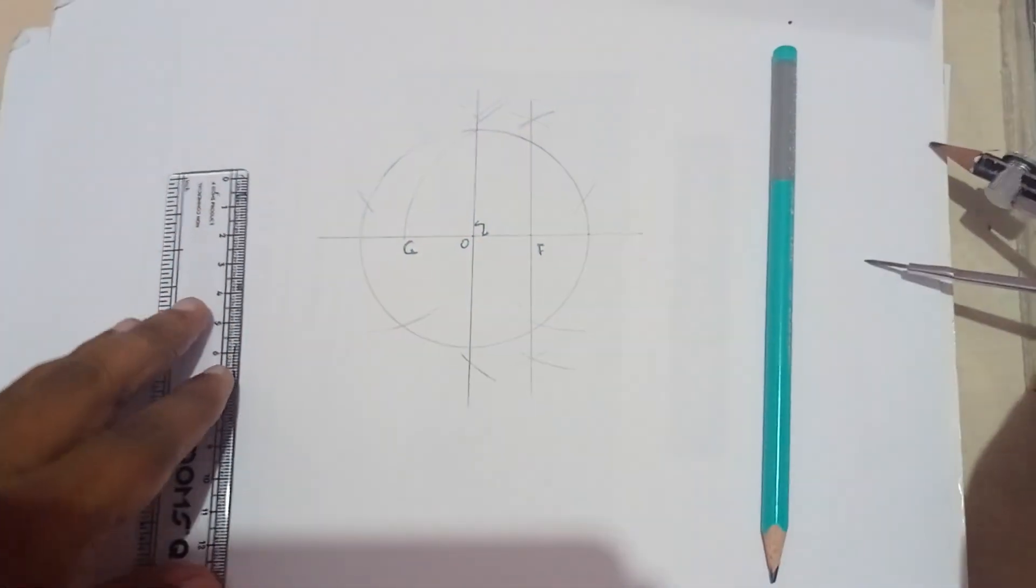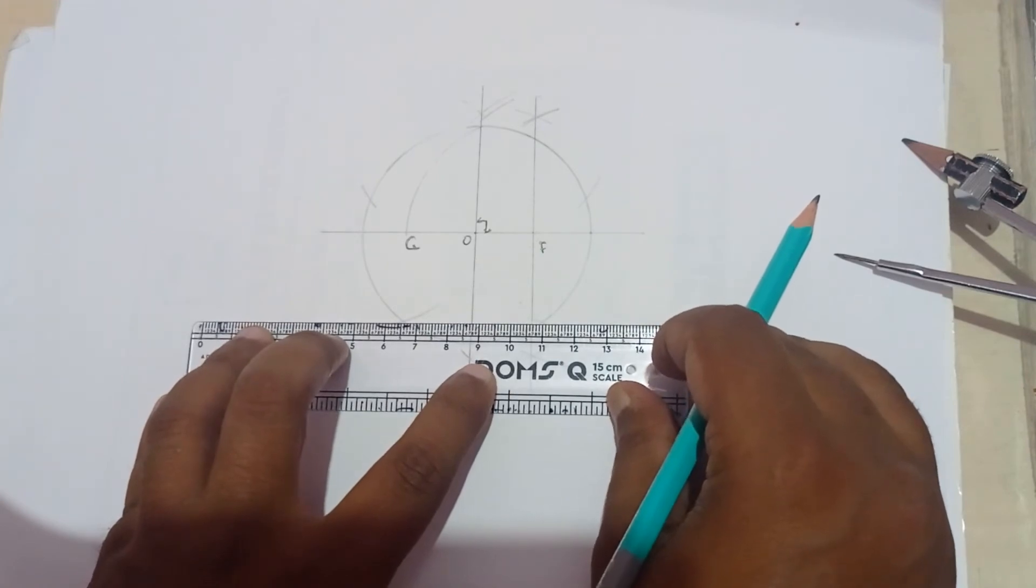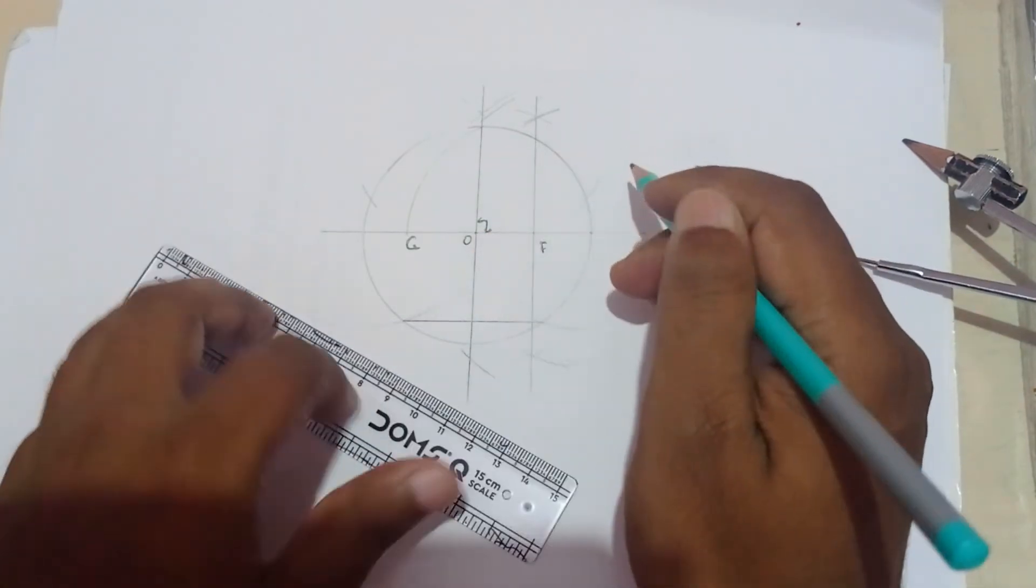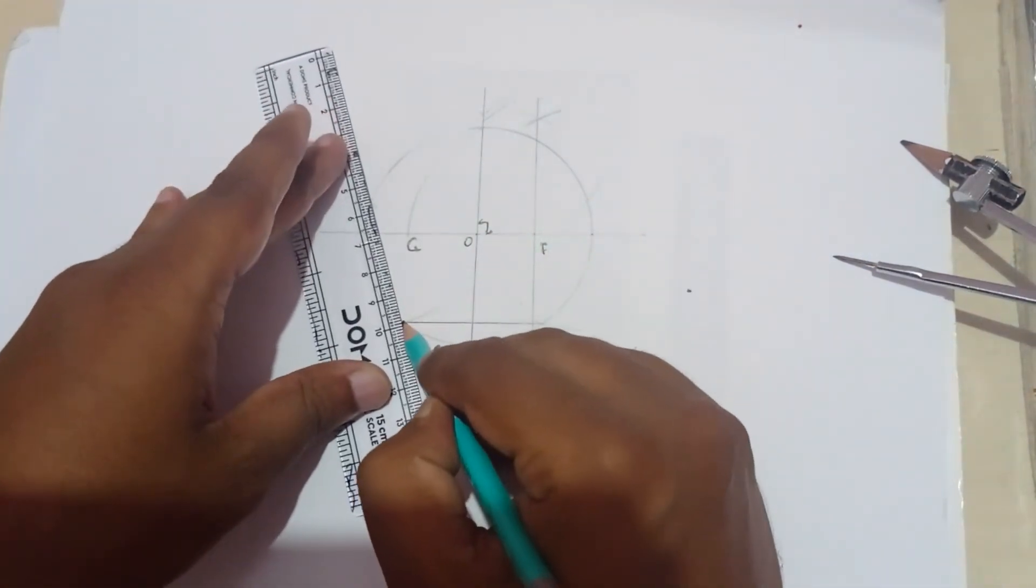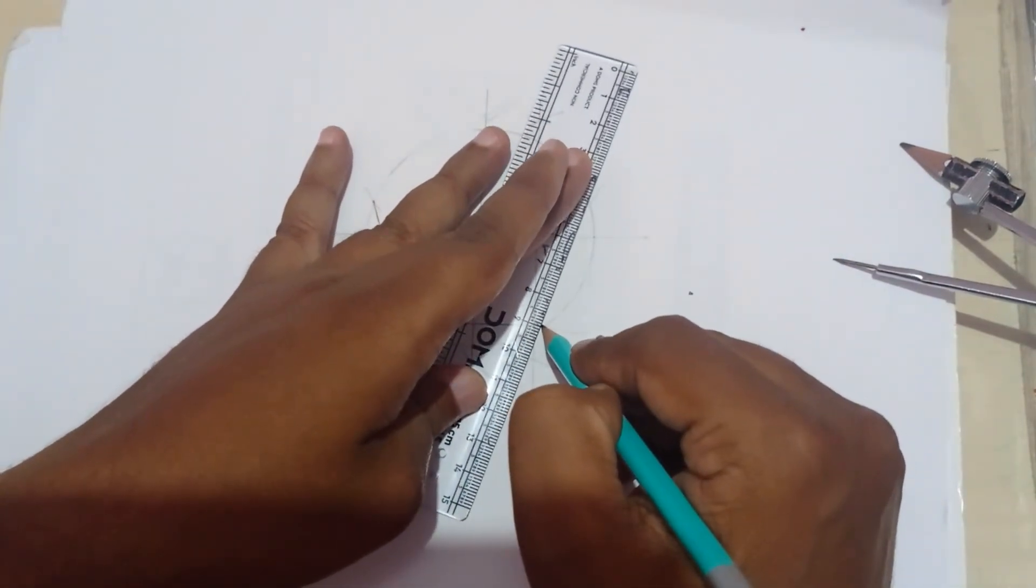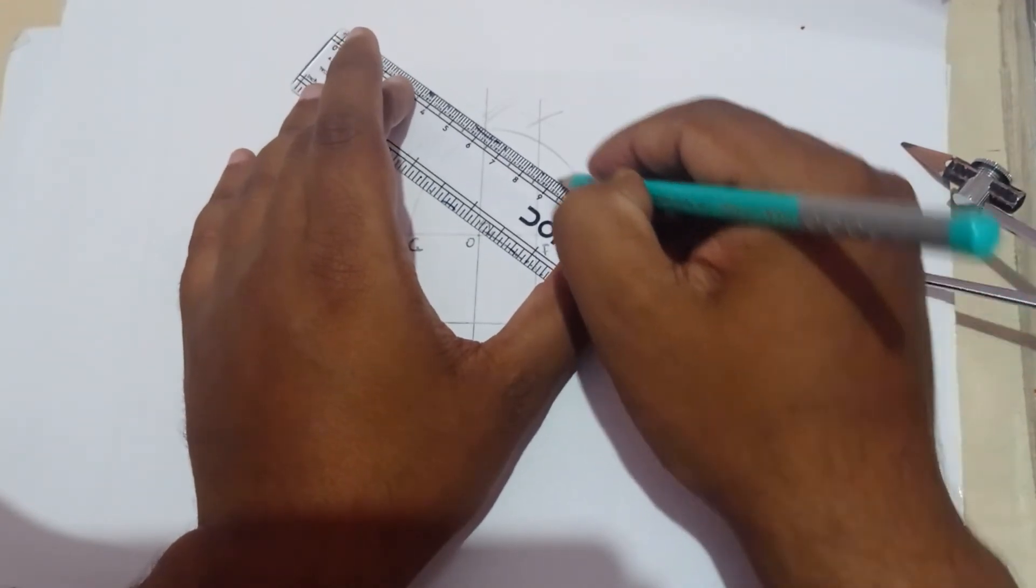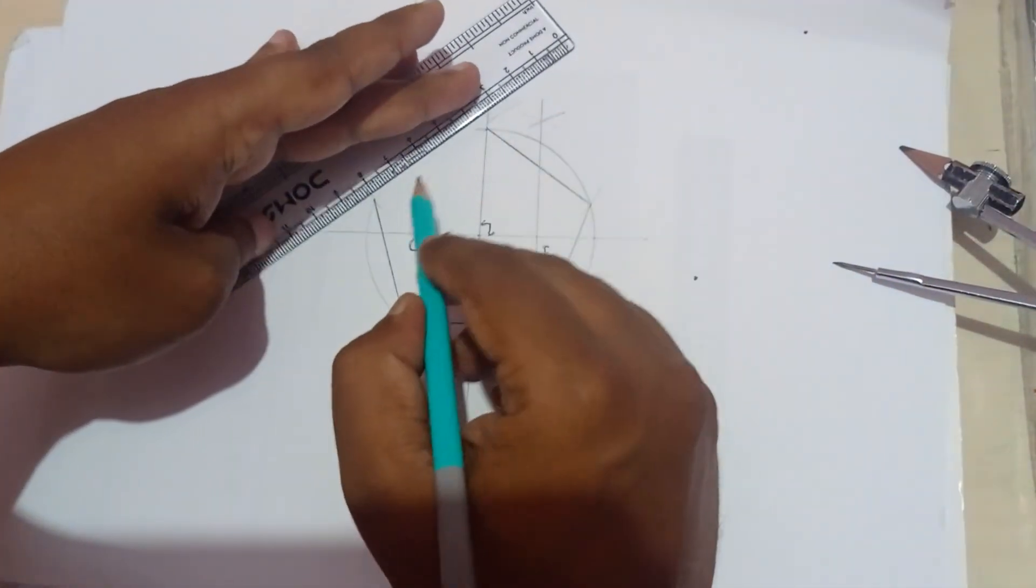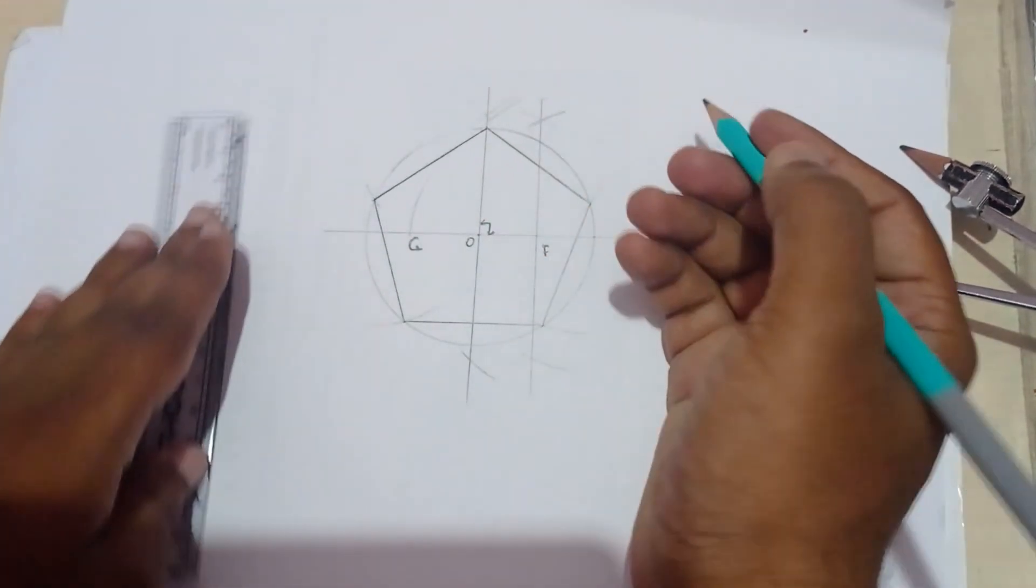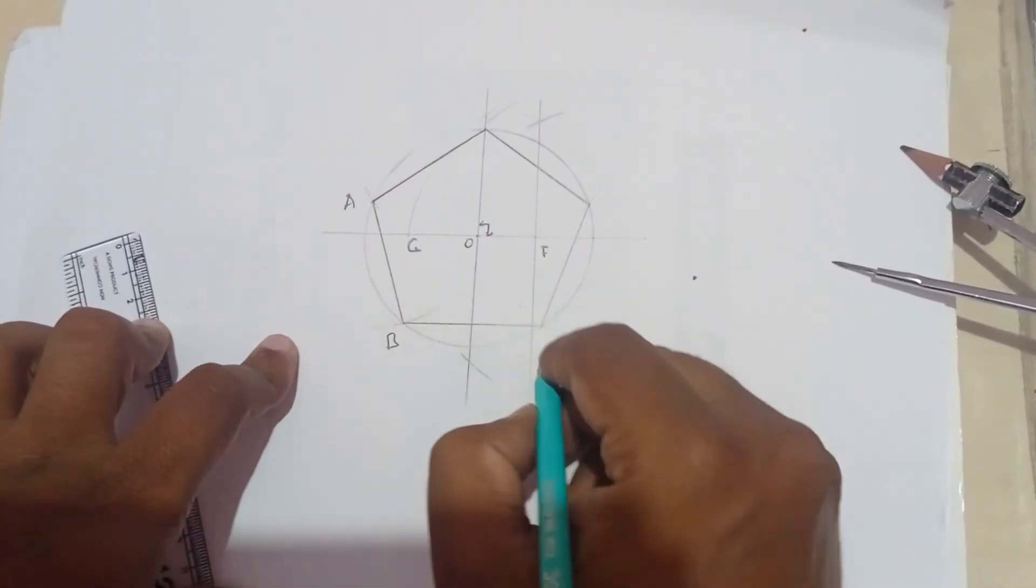Now you can join all these cut points. You'll get the regular pentagon here. This is how we construct a pentagon inside of a circle, an inscribed pentagon inside of a circle.